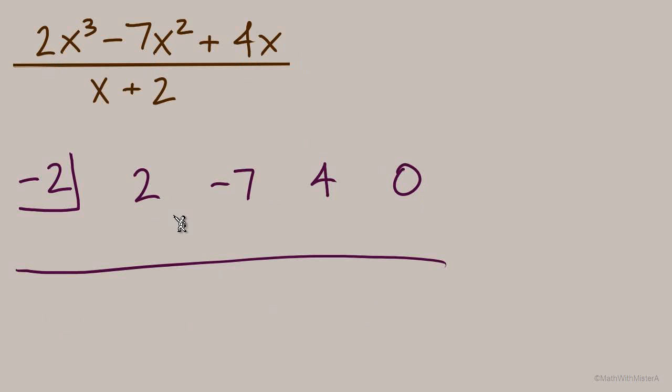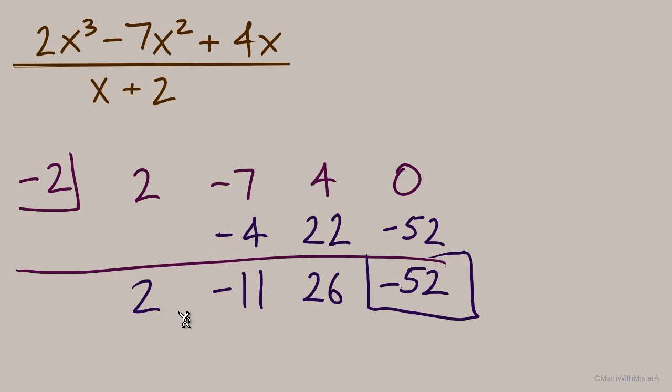Now let's go through synthetic division. We'll bring down that first digit, 2. Multiply back up. Each multiply is by this number, negative 2. Add back down, negative 11. Multiply back up. Add down and so on. There's our remainder, negative 52. And these numbers are the coefficients of our quotient, 2x squared minus 11x plus 26.